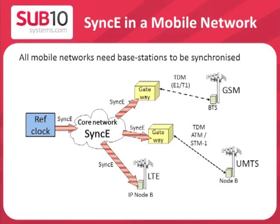This slide looks at distributing timing in a mobile network. For SyncE, there is an incoming primary reference clock, and the red striped arrows show the extent of SyncE permeating through the network. For an LTE network, the SyncE signal can be carried all the way to the IP Node B — the LTE base station. For GSM and UMTS, a gateway translates the SyncE timing into the timing pulse in a TDM or ATM line to the base station. Either way, accurate synchronization is required and SyncE provides a robust way to achieve it.